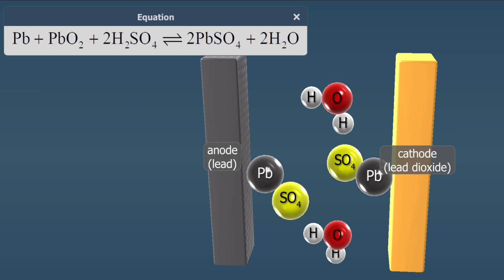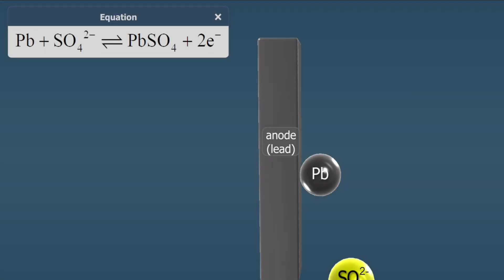When the battery discharges, the direction of the current is opposite to the direction when the battery is charging. During discharge, the lead plate, the anode, releases lead ions, and two electrons are formed.